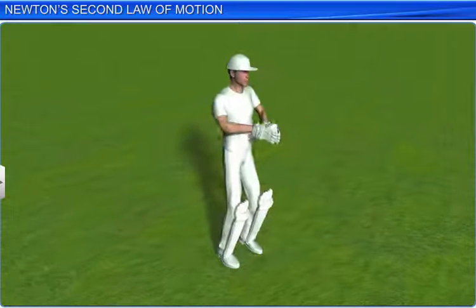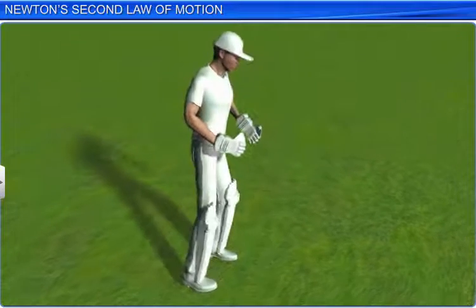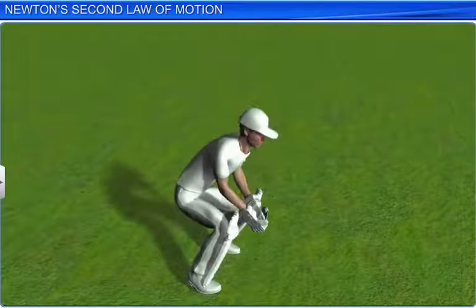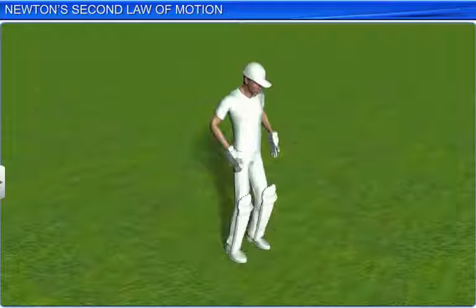A wicket keeper, after gathering the ball away from his body, pulls his hands towards himself to avoid injury to his hands. This proves that less force is required when it takes more time for the ball to come to rest.